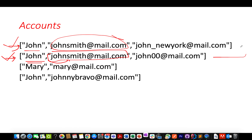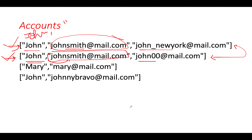We can merge these two accounts together. Once merged, the result will have John as the name and three email IDs: johnsmith@mail.com, john_newyork@mail.com, and john00@mail.com. We also need emails in sorted order. Sorting those three, the result would be john00 first, then john_newyork, then johnsmith.